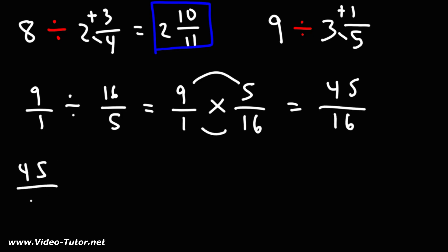Let's convert the improper fraction back to a mixed number. What is the highest multiple of 16 just under 45? That's 32. 45 minus 32 is 13. We can break apart 45 into 32 plus 13. 32 divided by 16 is 2.